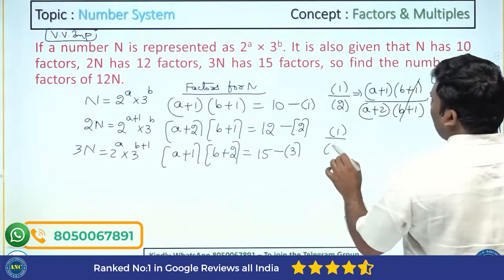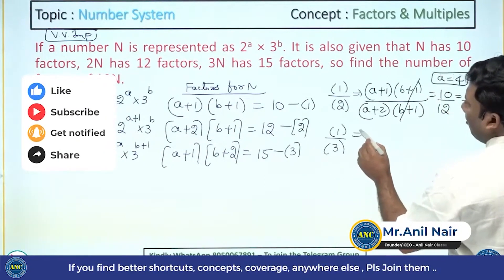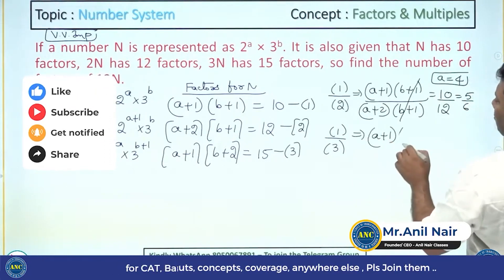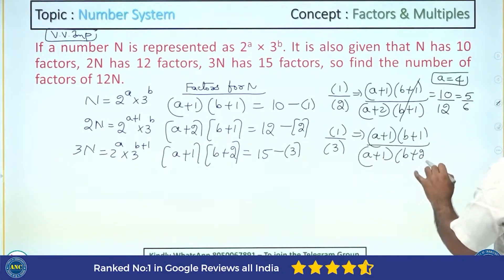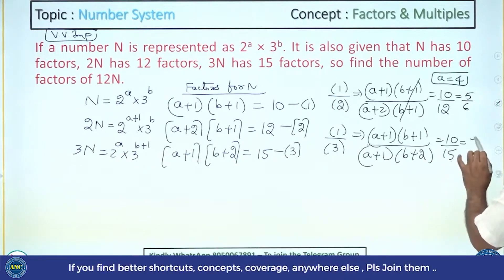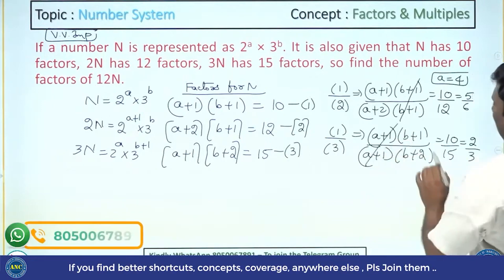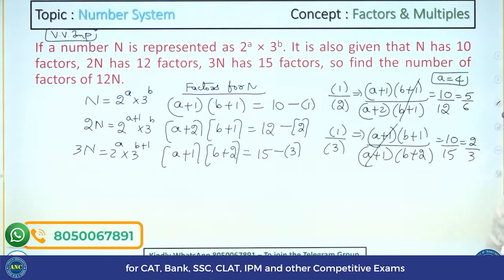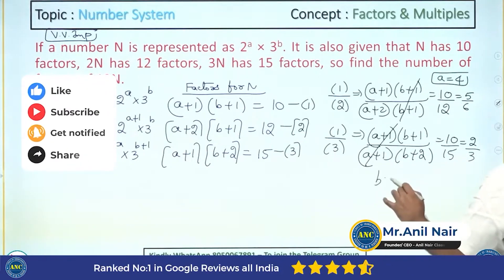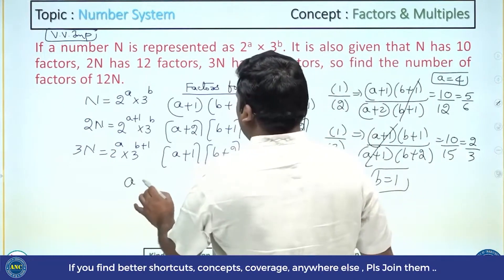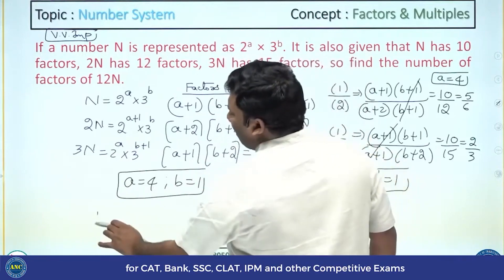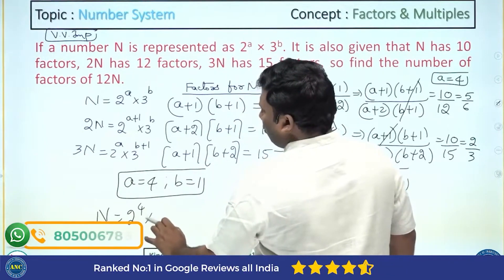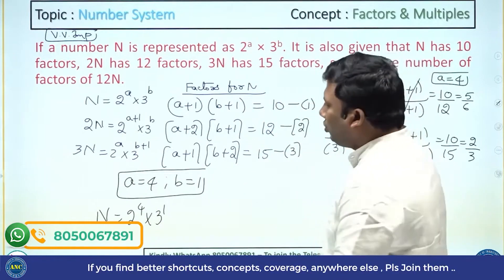Now divide equation 1 by equation 3: (A+1)(B+1) divided by (A+1)(B+2) equals 10 by 15, which simplifies to 2 by 3. The (A+1) terms cancel, giving (B+1)/(B+2) = 2/3. So B+1 is 2 and B+2 is 3, meaning B value is 1. So A equals 4 and B equals 1, meaning N = 2 power 4 into 3 power 1.